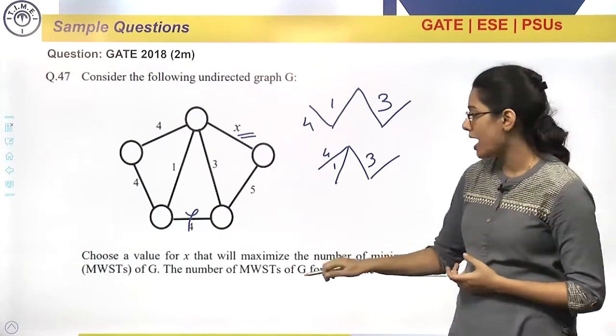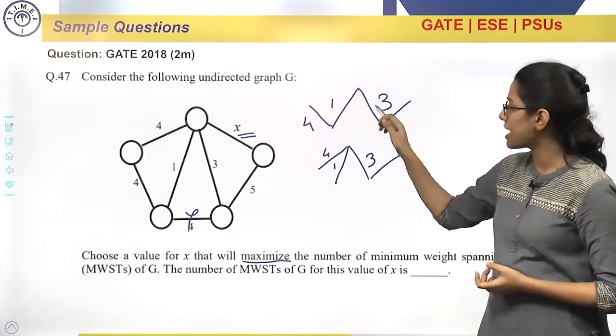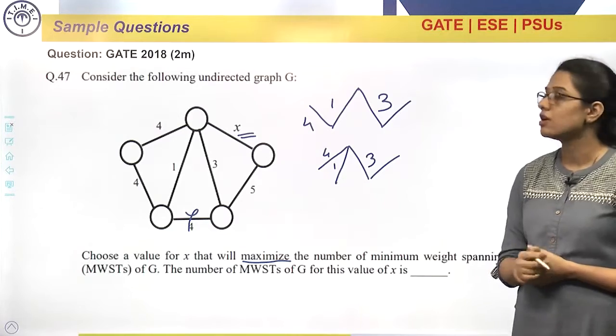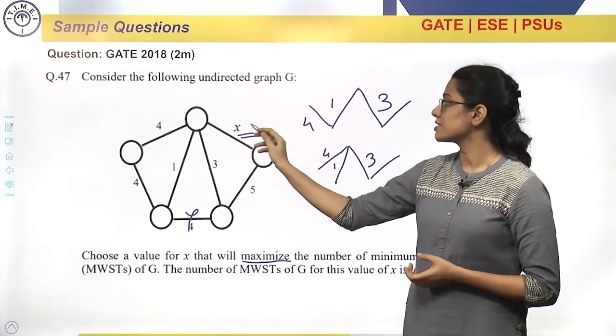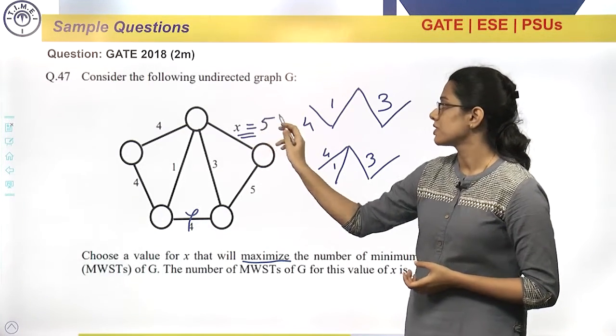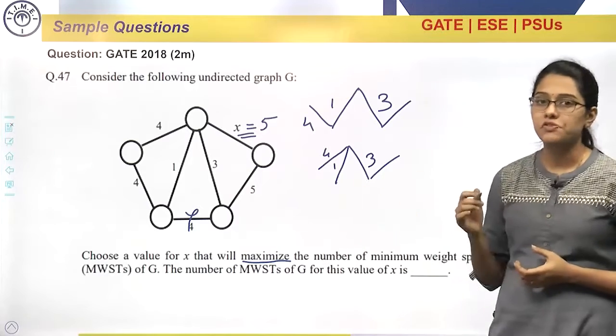But we want to maximize, we want to maximize number of structures possible here. So what we can do, we can consider x exactly 5, like there 4 4, here 5 5.